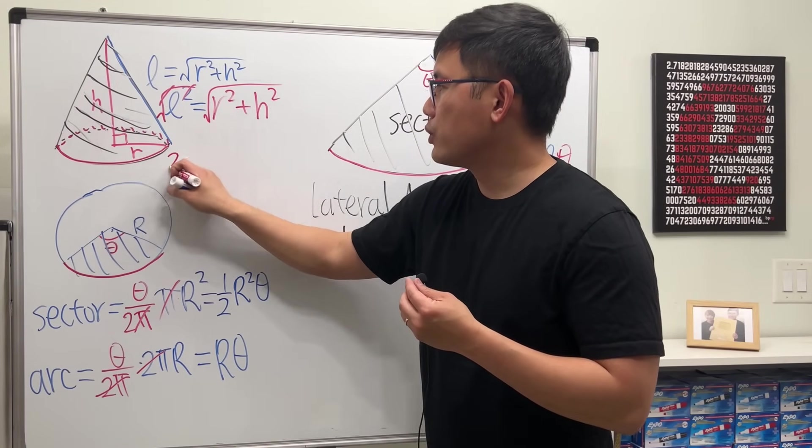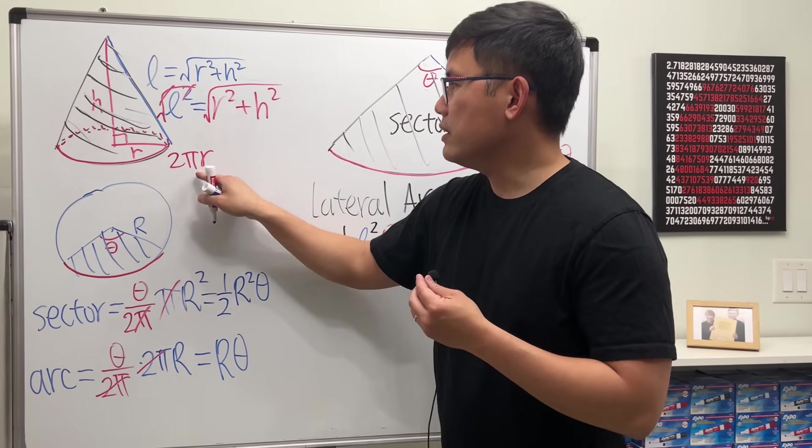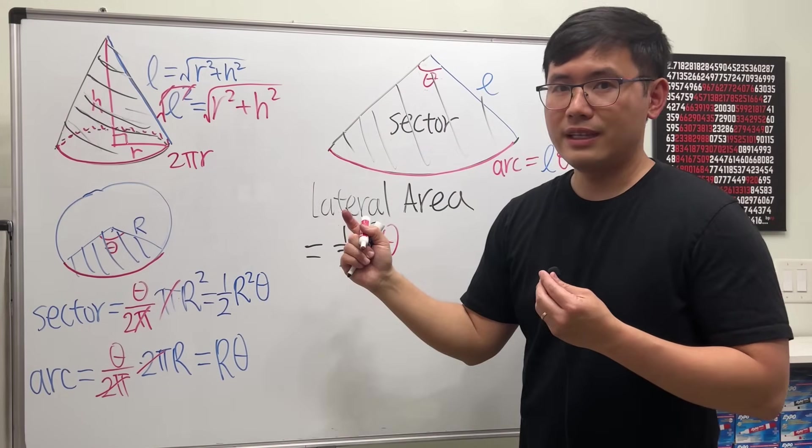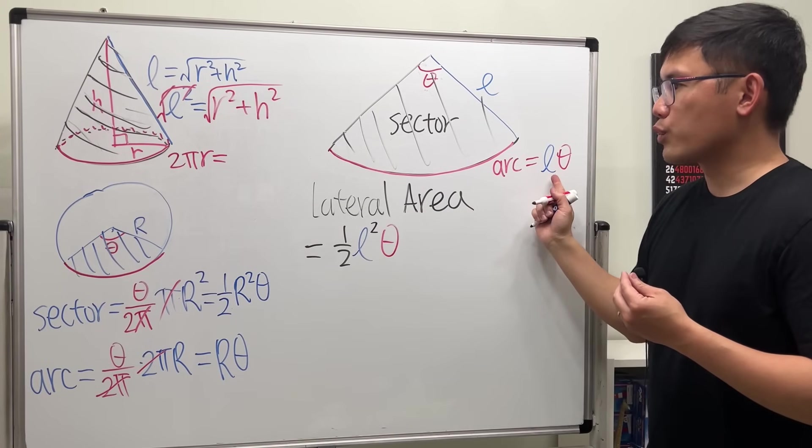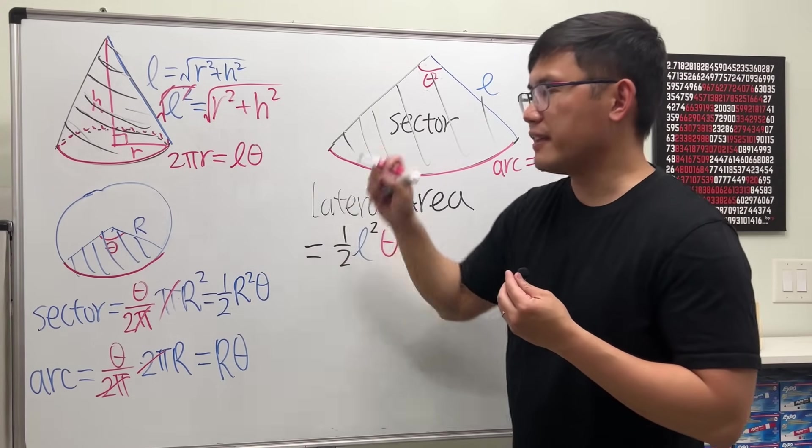This right here will just be 2 pi r for the circumference of the base circle. Yeah? And this must be equal to our arc right here, which is just L times theta.